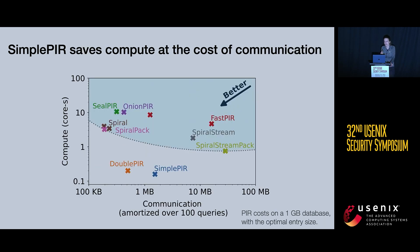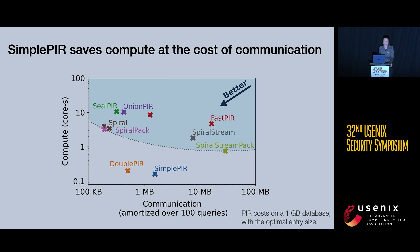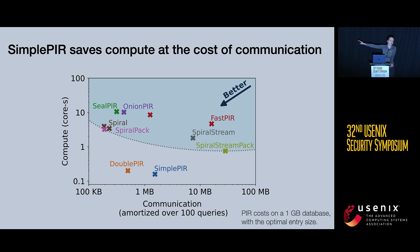As I mentioned, these throughput gains come at some communication overhead. Here I show both communication and computation for all single-server PIR schemes. Ideally we want small communication and small computation — the bottom-left corner of this graph. Communication is amortized over 100 queries, assuming the client makes at least 100 queries to the same database. SimplePIR and DoublePIR achieve a new point in the PIR design space.